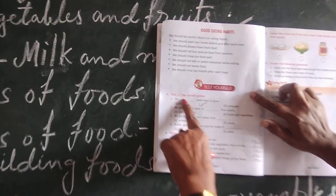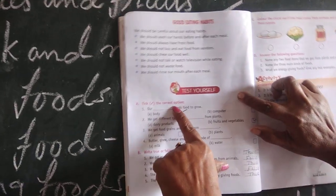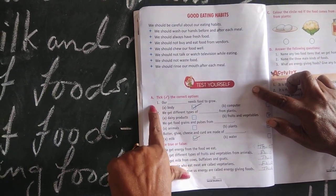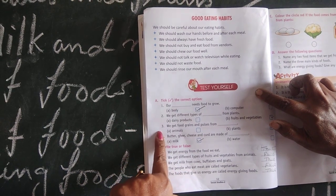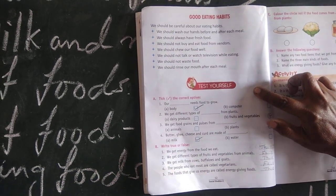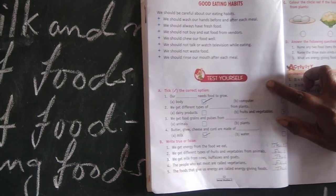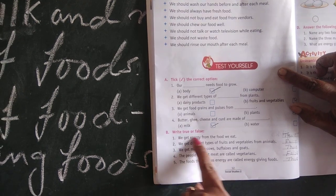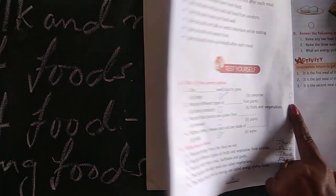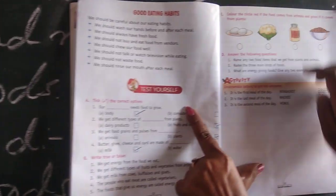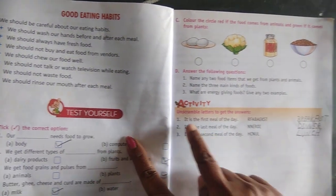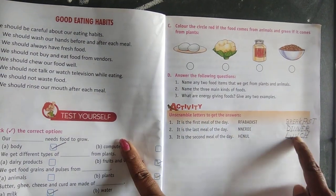Take the correct option. Number A — those questions are ticked. B number — write the true or false. C number — activities.